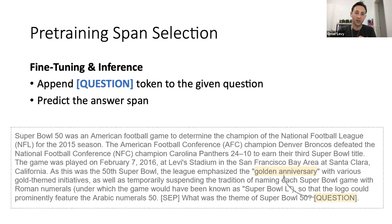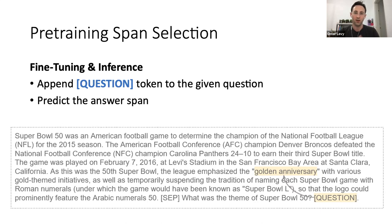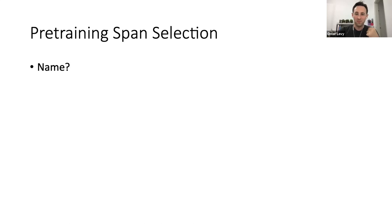We don't need to introduce new parameters during fine-tuning. We called our model Splinter — it has a backronym: span-level pointer. I'm going to refer to our model as Splinter from now on. Let's see what Splinter can do in few-shot question-answering, starting with SQUAD.